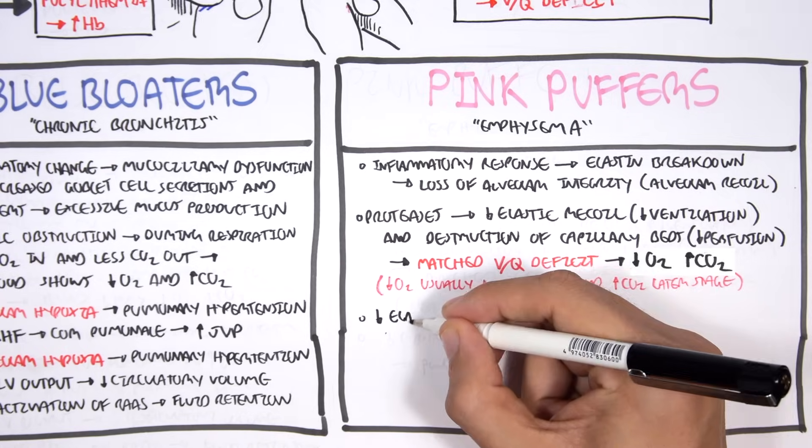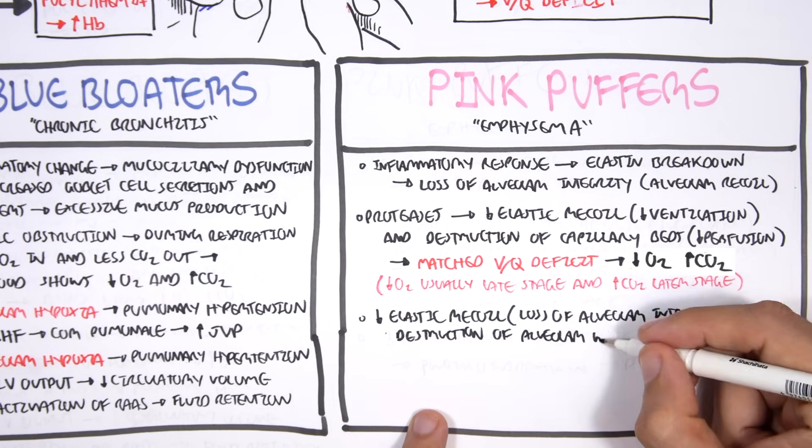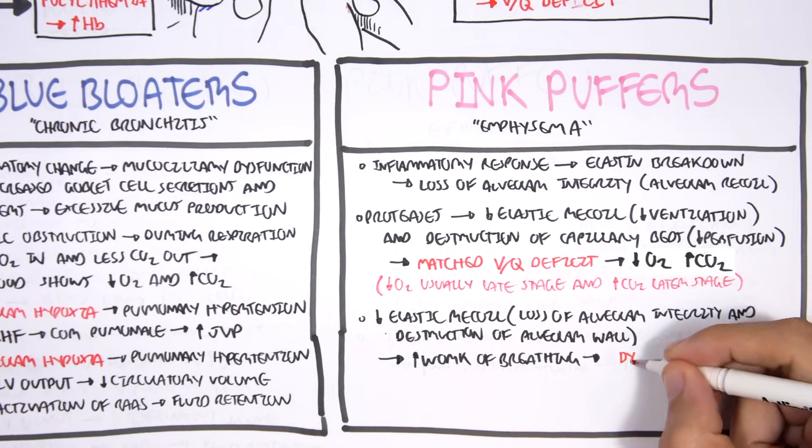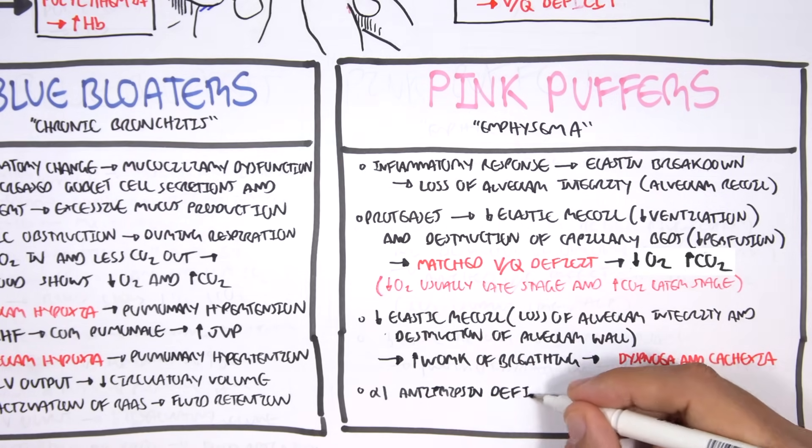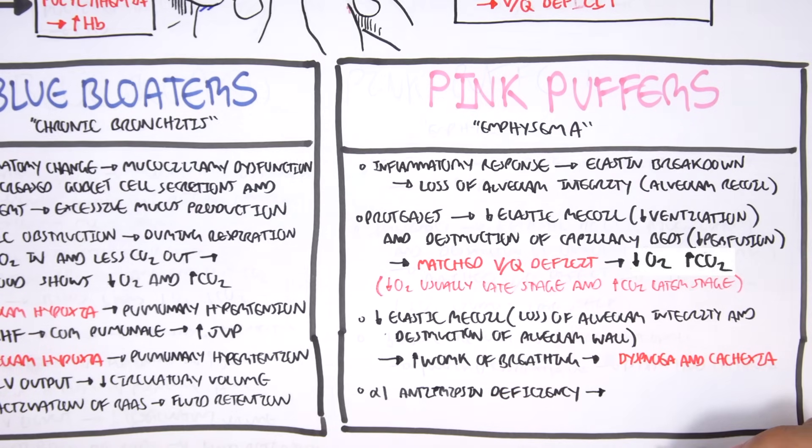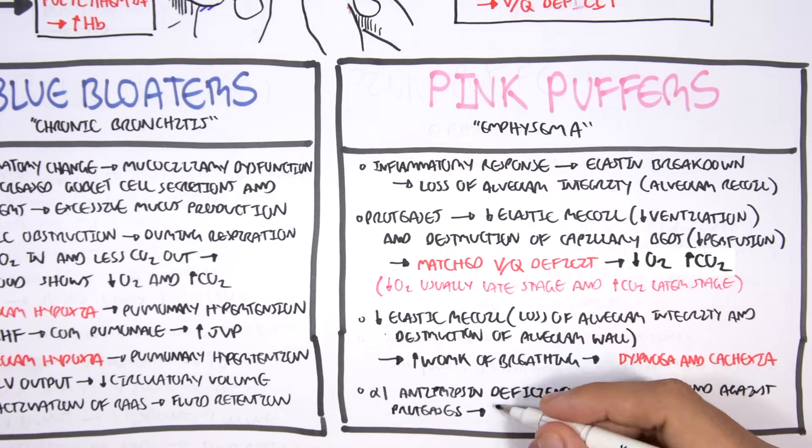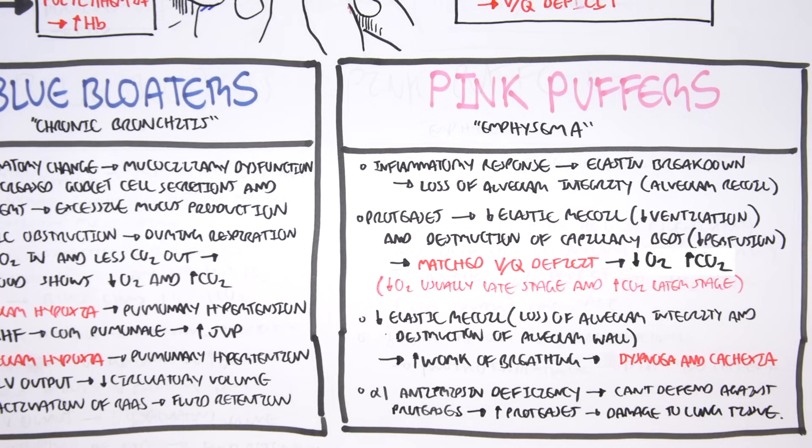The loss of elastic recoil is due to the loss of alveolar integrity and the destruction of the alveolar walls, and so the person needs to work a lot harder to breathe in. As a result, we get dyspnea and also cachexia. Now alpha-1 antitrypsin deficiency is a hereditary condition, which means that if you are deficient in antitrypsin, you cannot defend against proteases. So you have a net too much protease and less anti-protease, which means you get a net damage to your lungs essentially.